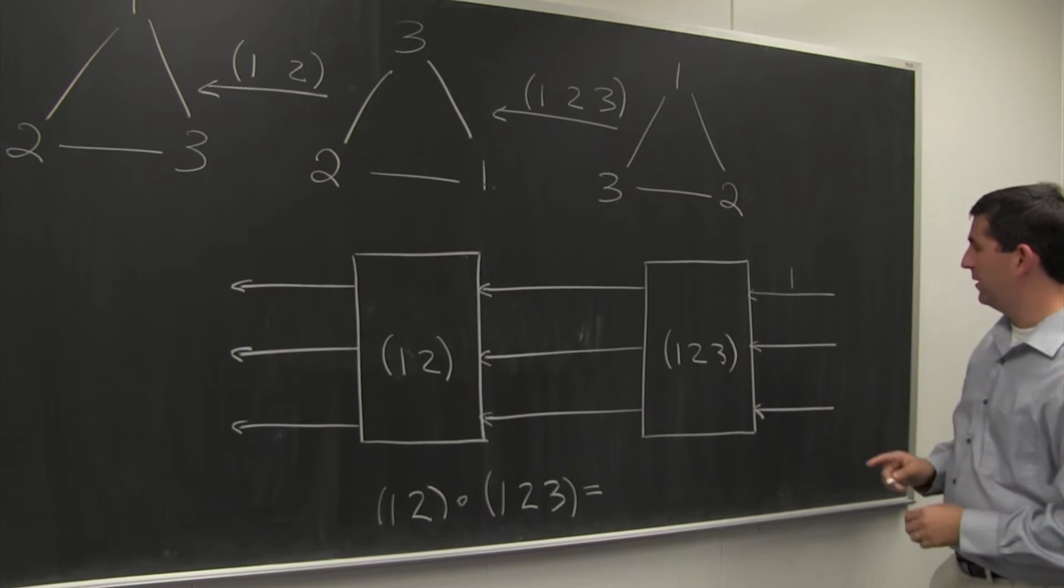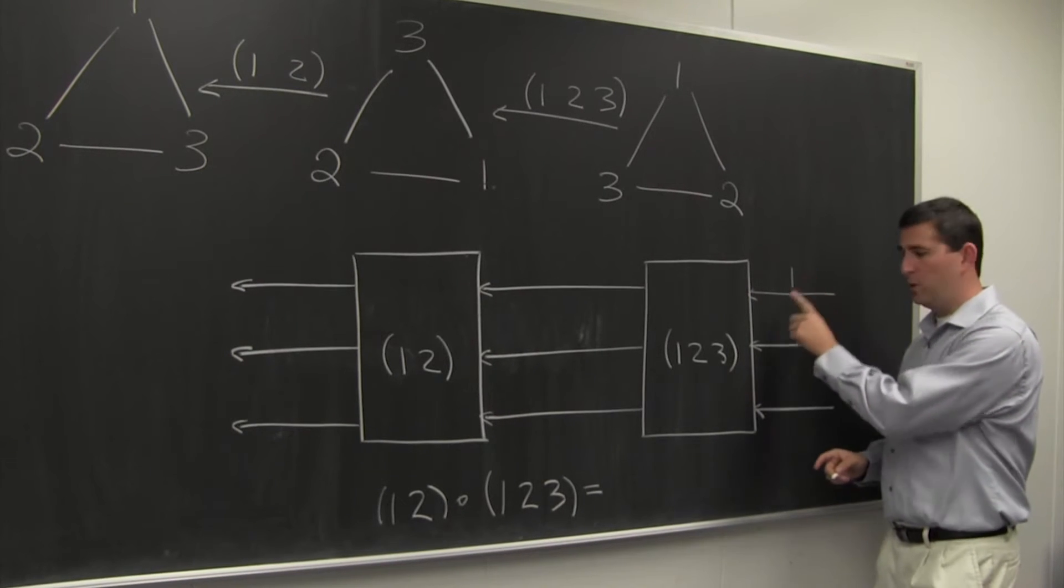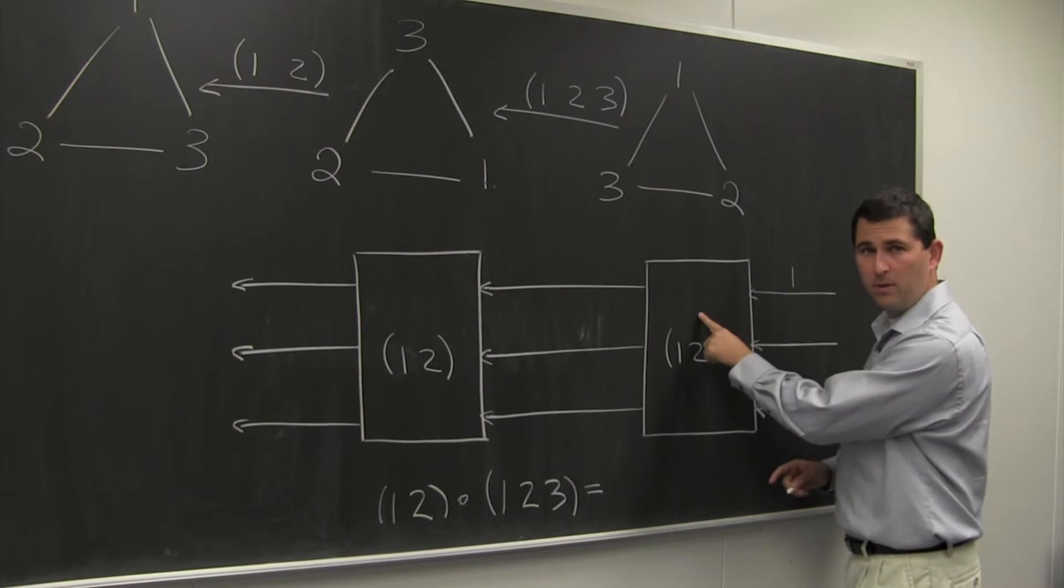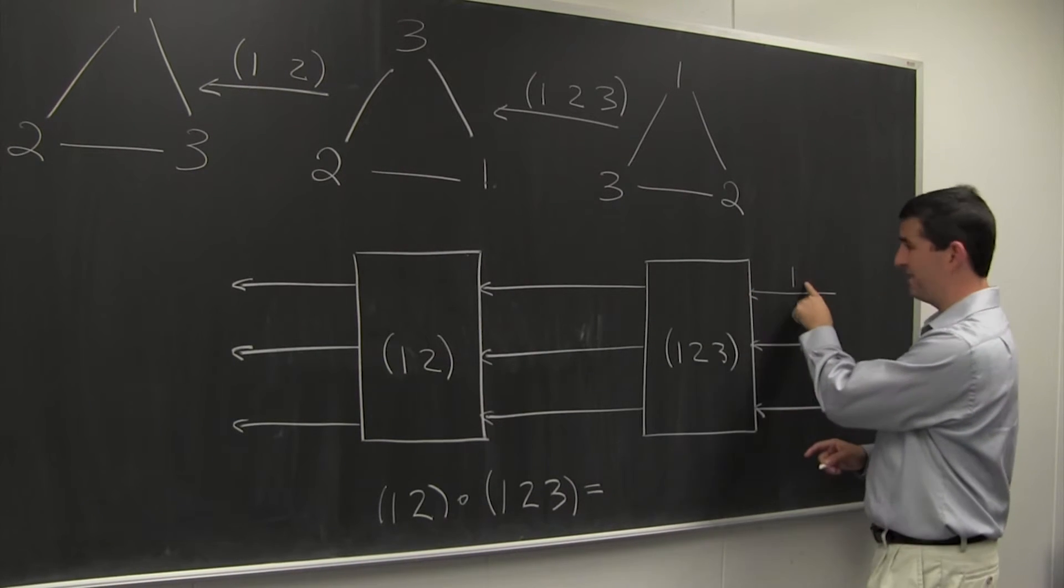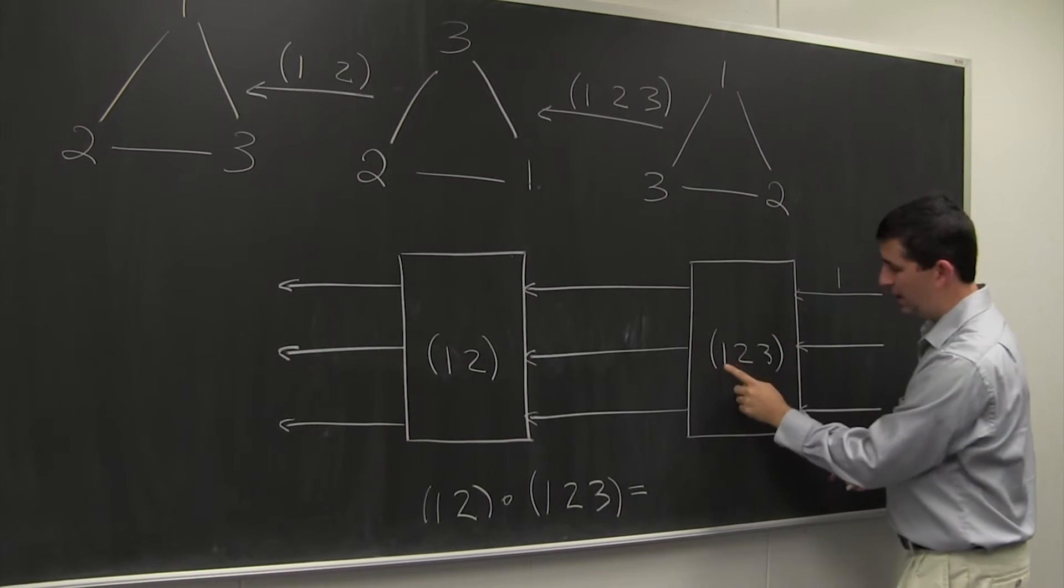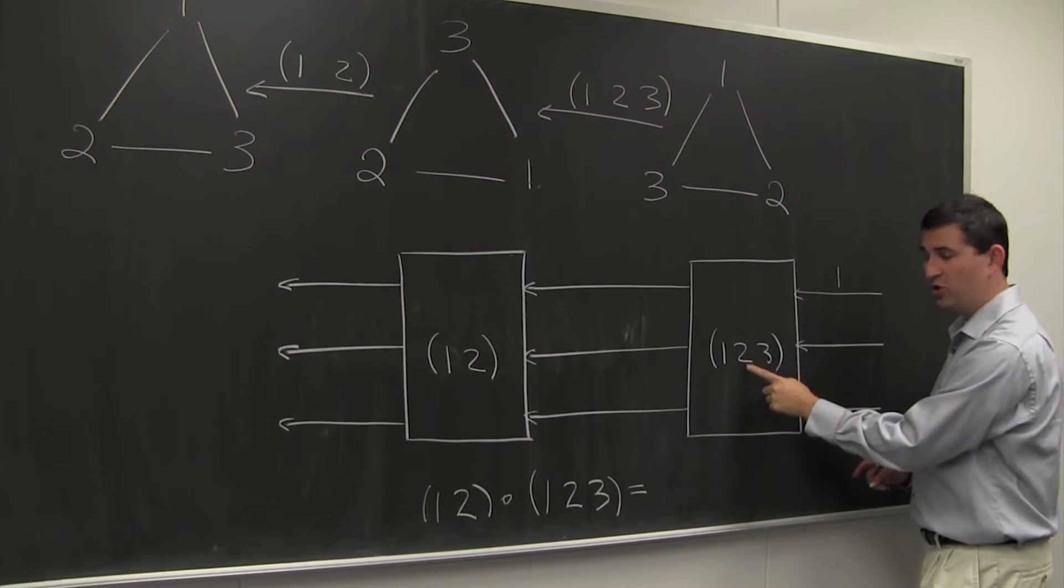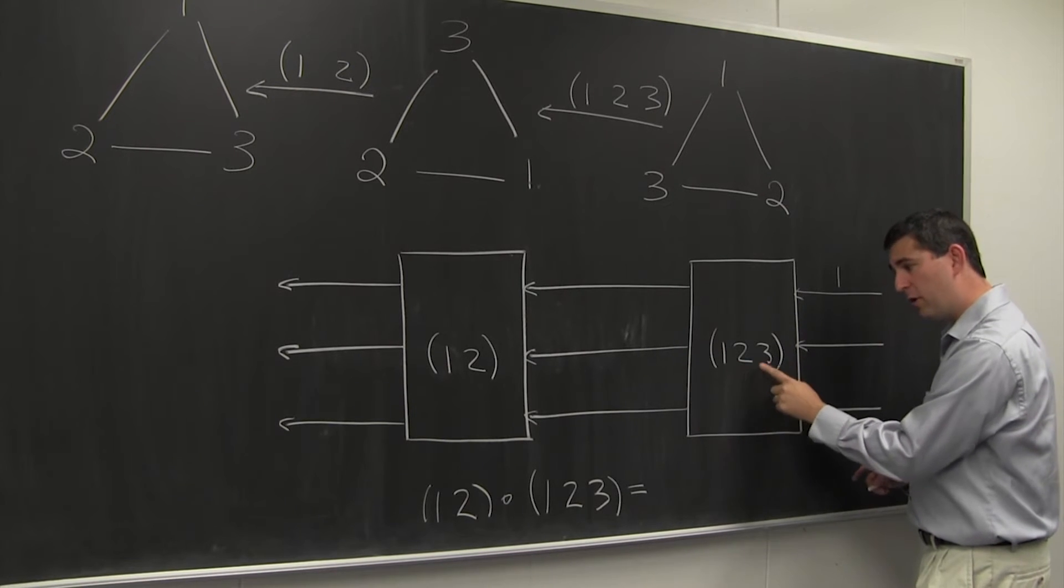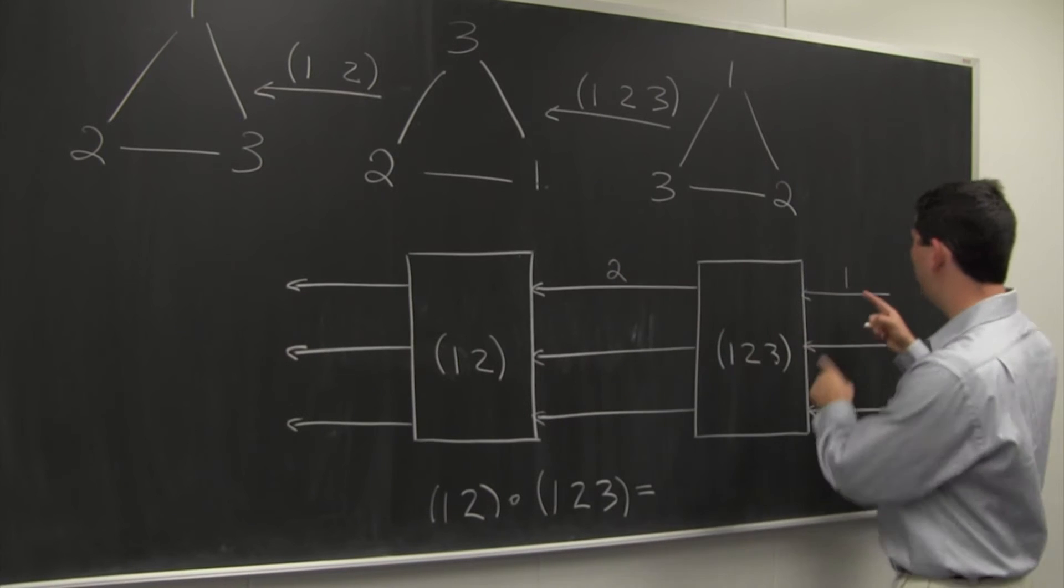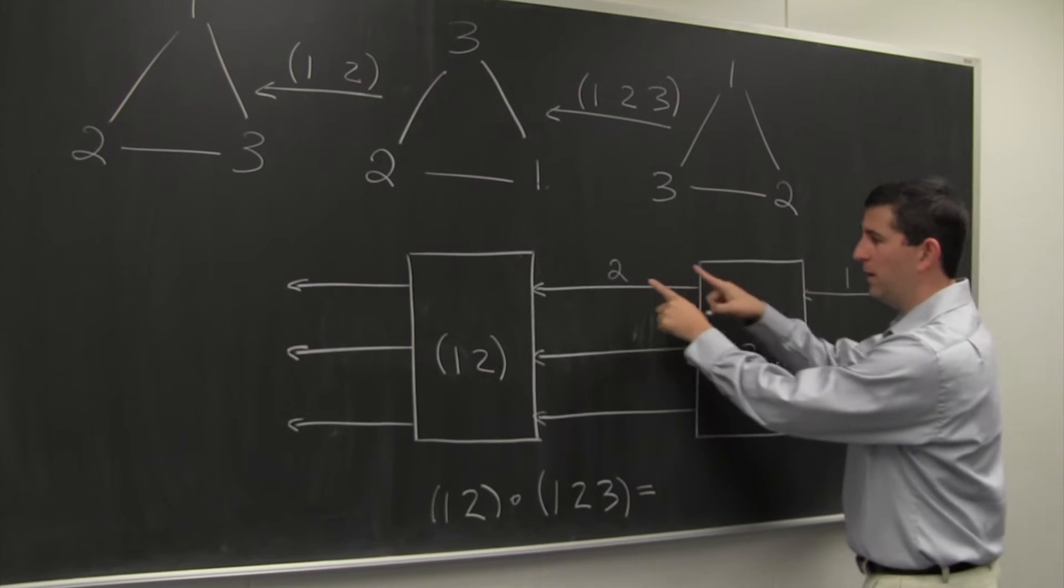If we want to know what happens to the number 1 when we apply the permutation 1, 2, 3, we put 1 into the function machine, which takes 1 as an input on the right, and outputs its value on the left. And here, 1 is sent to 2. Not 1 goes to 2 goes to 3. 1 goes to 2. So the 1 goes into the function, and the 2 comes out.